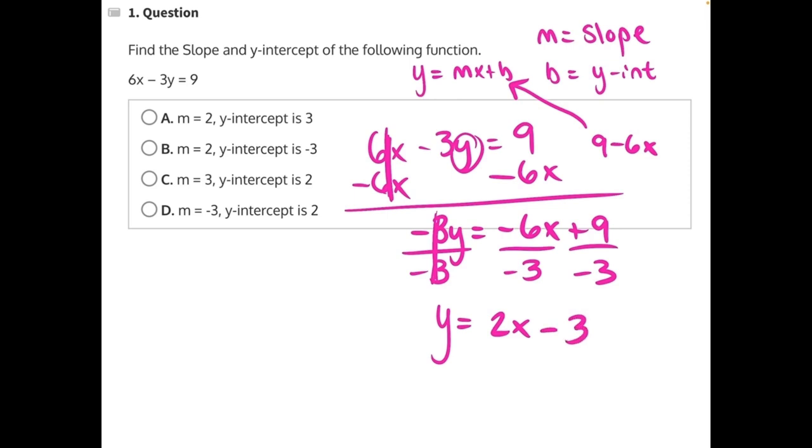So again, m, the number in front of x, is our slope, and b, our constant after x, is our y-intercept. So 2 is our slope, negative 3 is our y-intercept, making b our correct answer.